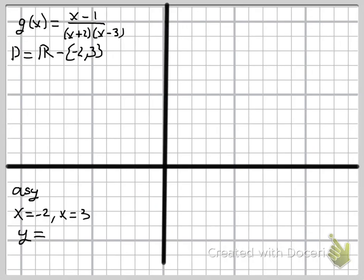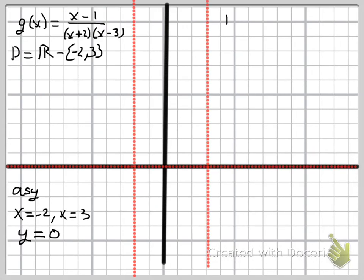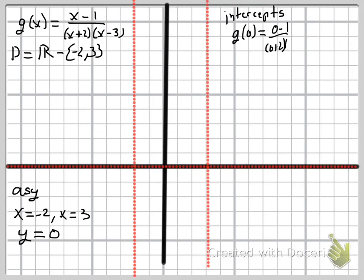For the horizontal asymptote: the degree of the numerator is 1, and the degree of the denominator — after foiling — is 2. Since the bottom has a larger degree than the top, we have a horizontal asymptote at y = 0. I'll draw in all three asymptotes. Now for the y-intercept, we plug zero in for x and get positive 1/6. We'll plot (0, 1/6) — it's a little hard to place precisely, but we're just looking for a sketch.